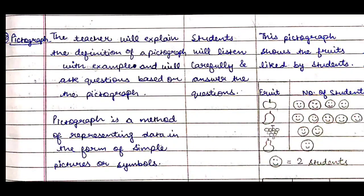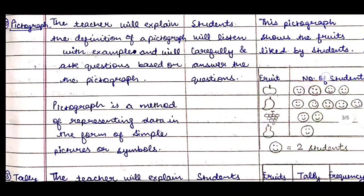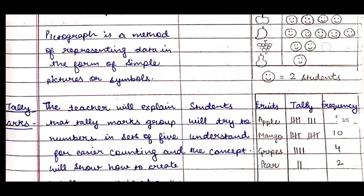Next comes pictograph. The teacher will explain the definition of a pictograph with examples and ask questions based on a pictograph; students will listen carefully and answer the questions. The definition: a pictograph is a method of representing data in the form of simple pictures or symbols. The teacher will draw a pictograph on the board showing the fruits liked by students, with columns for fruit, number of students, and a key where one smiley equals two students.